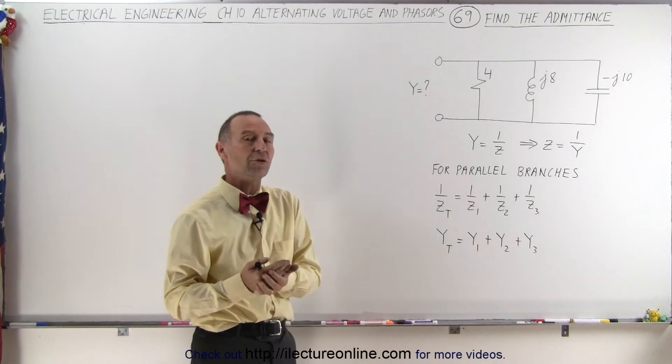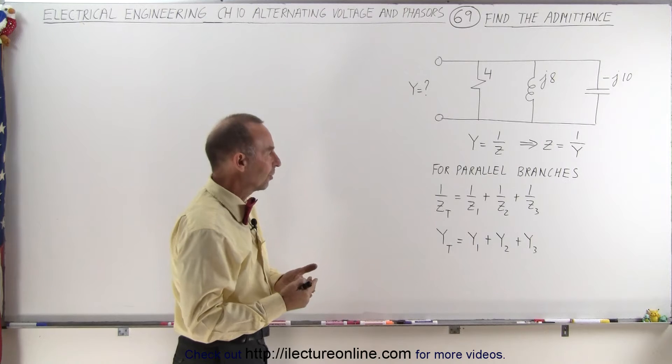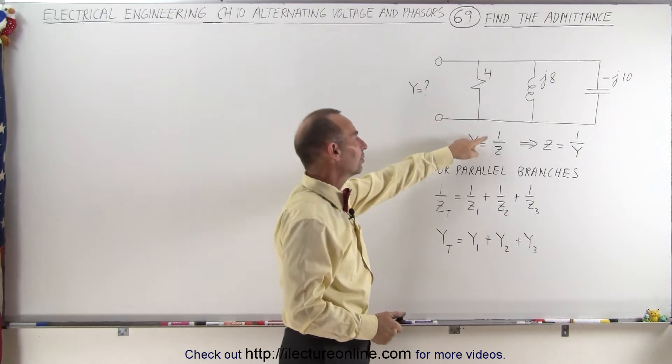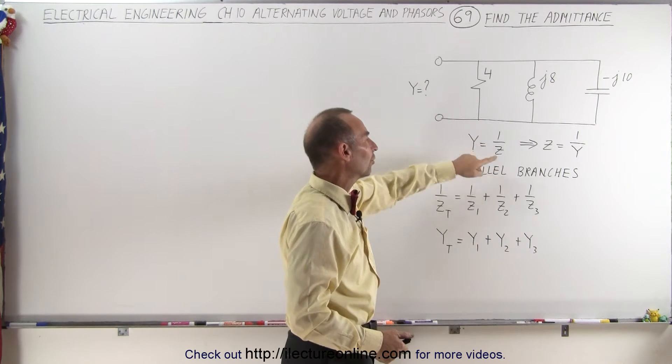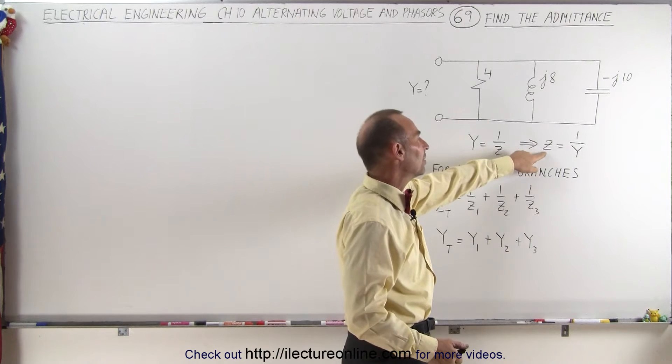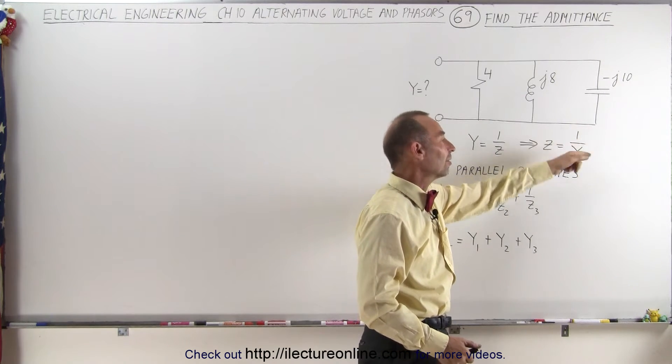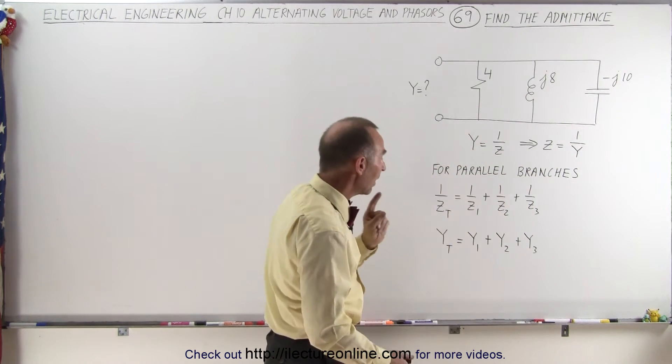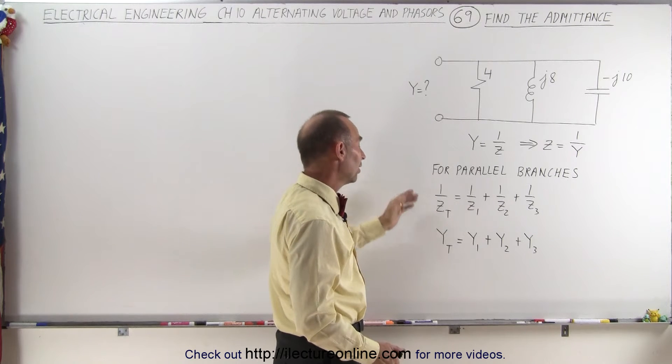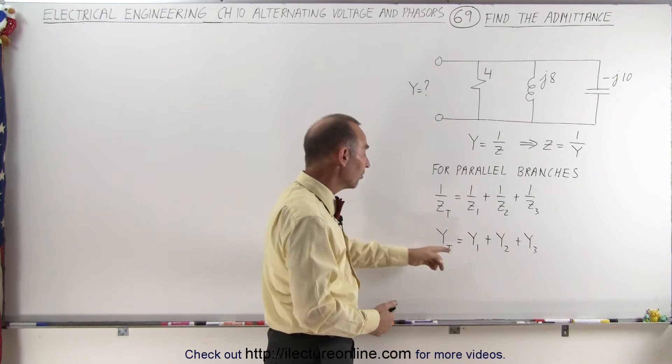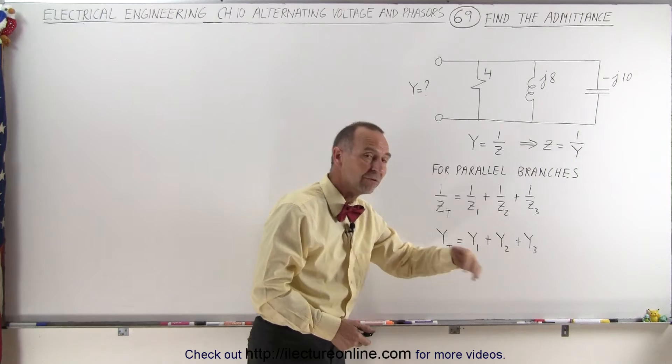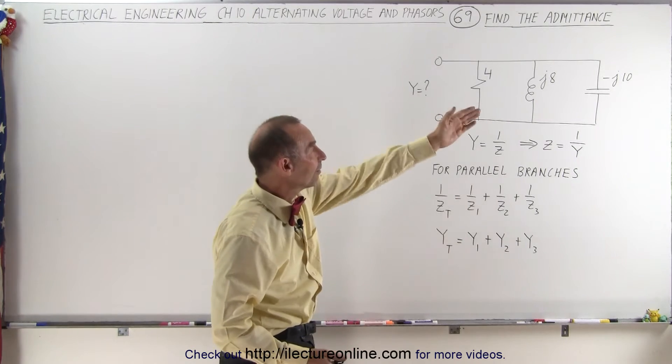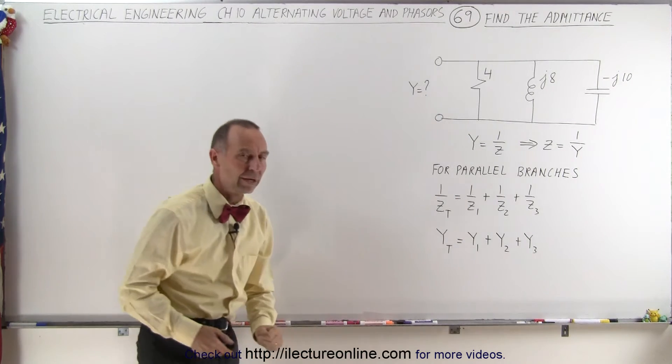So it might be easier to use admittance. We know that the admittance is equal to the inverse of the impedance. So if you want to find the impedance, you can first find admittance and then simply take the inverse because for parallel branches, the total admittance is simply equal to the sum of the individual admittances of each of the components in a parallel circuit.